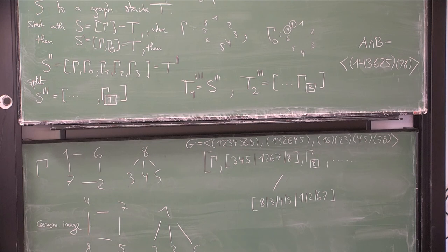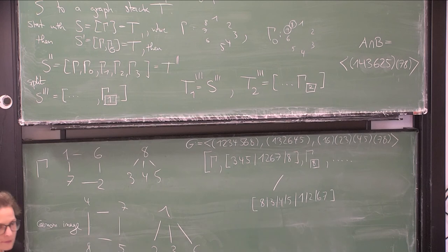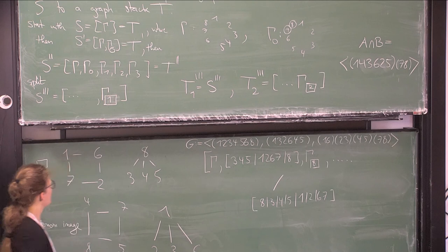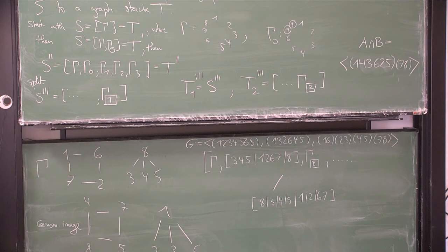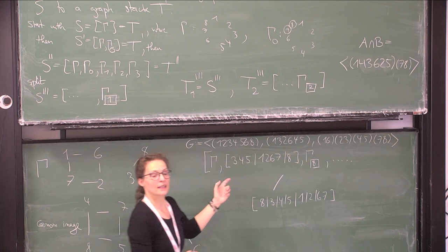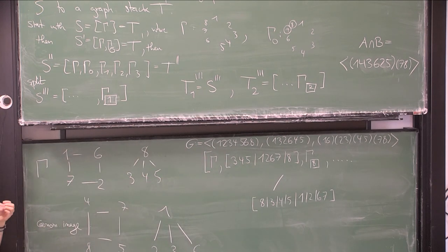Are there questions for Rebecca? One question concerns whether what happened with three, four, five, one, two, six, seven is similar to the complement. I would have to sit down and write it down with you — this is really just a partition that separates vertices of the graph by number of neighbors, not meant to be an incidence pattern. But maybe we can discuss your question later in more detail.